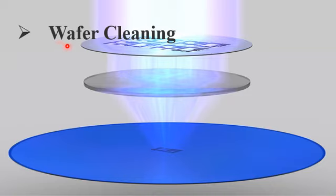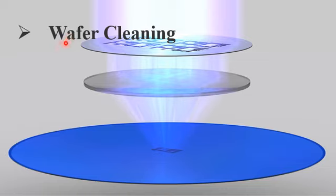One of the most common contaminants observed is contamination from scribing or cleaving. When you scribe or cleave your sample, you can easily see impurities caused by these processes. You need to minimize those impurities. Laser scribing is usually used to clean the wafer from impurities caused by scribing and cleaving.